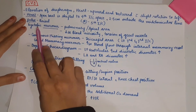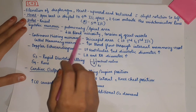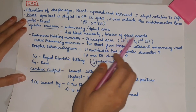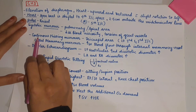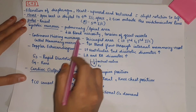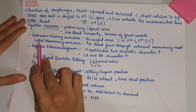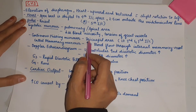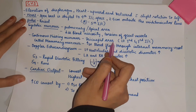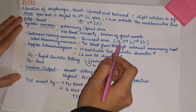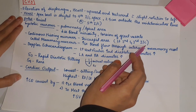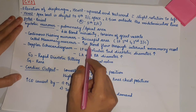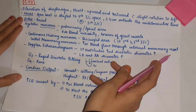There is a systolic murmur in the pulmonary or apical area, and decreased blood viscosity occurs. The systolic murmur occurs due to decreased viscosity and torsion of the great vessels. There is also a continuous hissing murmur called the mammary murmur, heard in the tricuspid area and the left second and third intercostal space, due to increased blood flow through the internal mammary vessels.